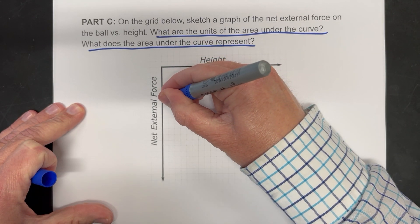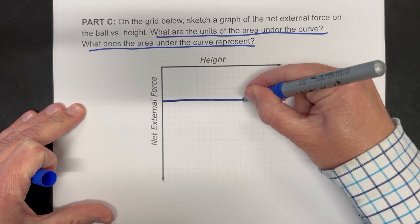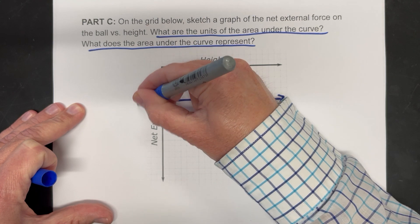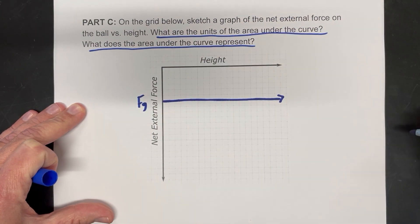Well, there is a constant force, just the force of gravity acting on it. And so that value right there is the force. Let's just say that's the force of gravity.